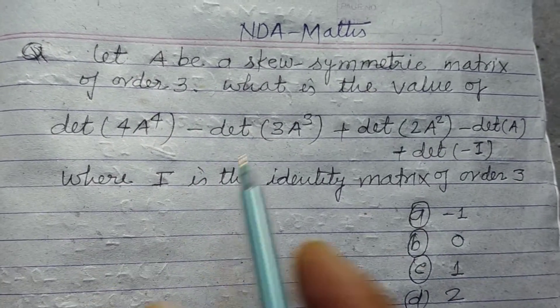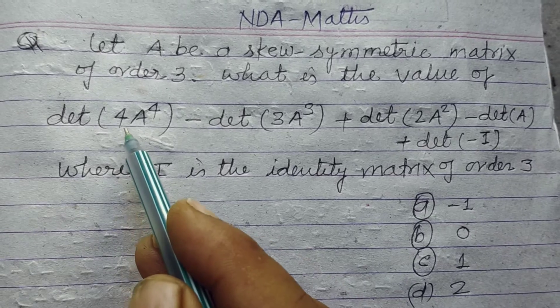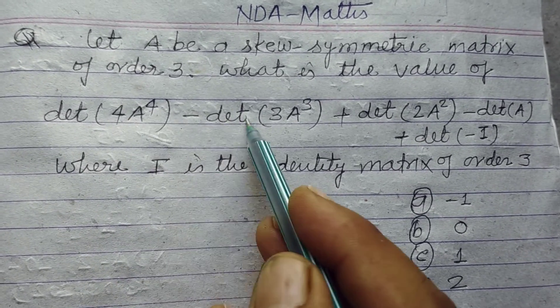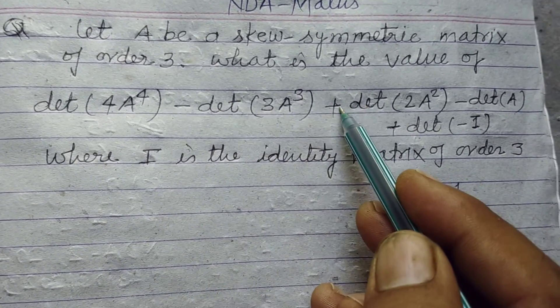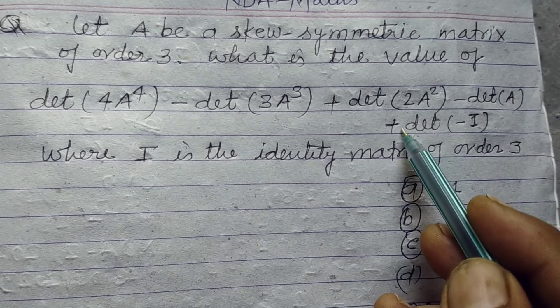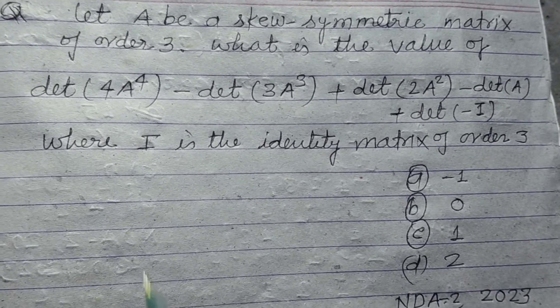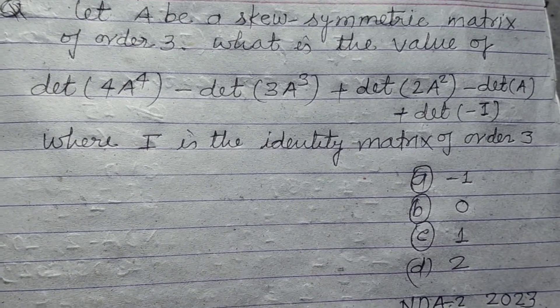Let A be a skew-symmetric matrix of order 3. What is the value of det(4A⁴) - det(3A³) + det(2A²) - det(A) + det(-I), where I is the identity matrix of order 3?